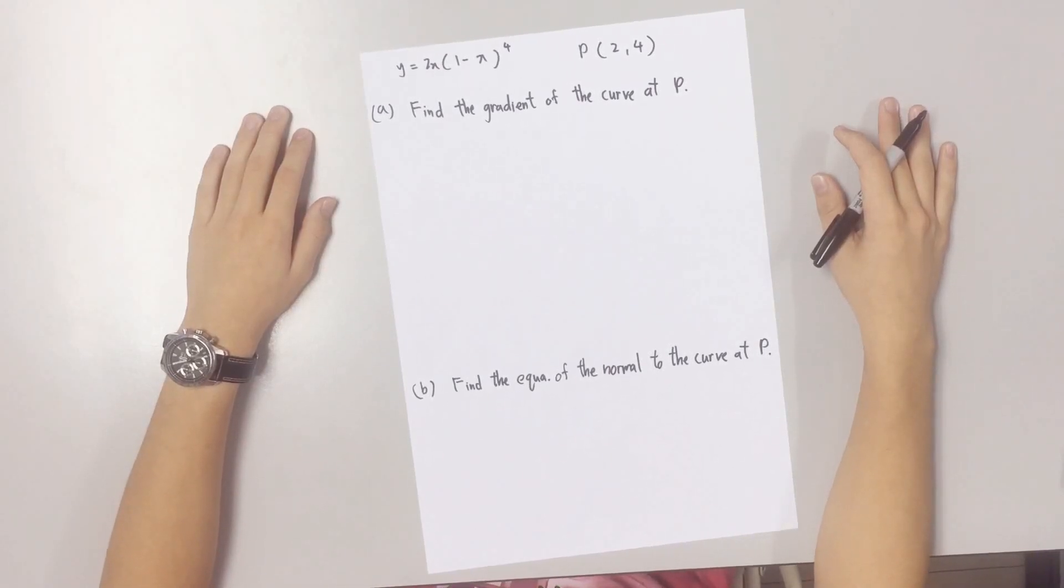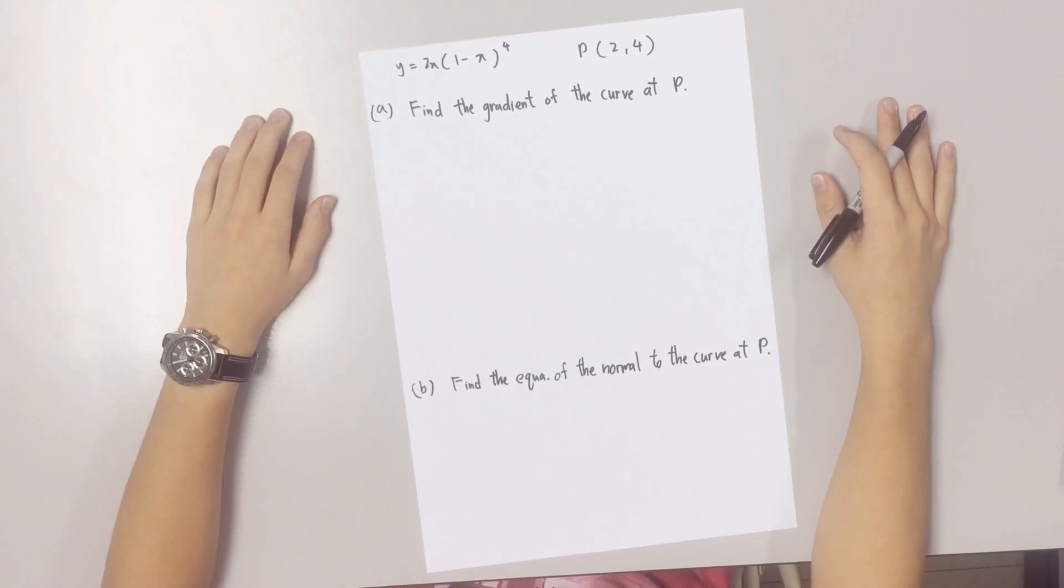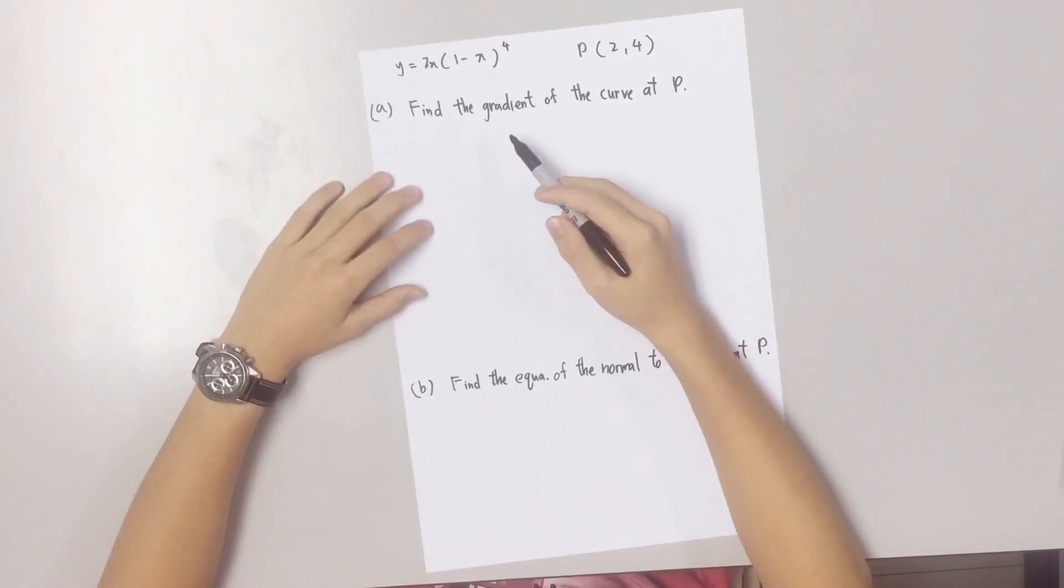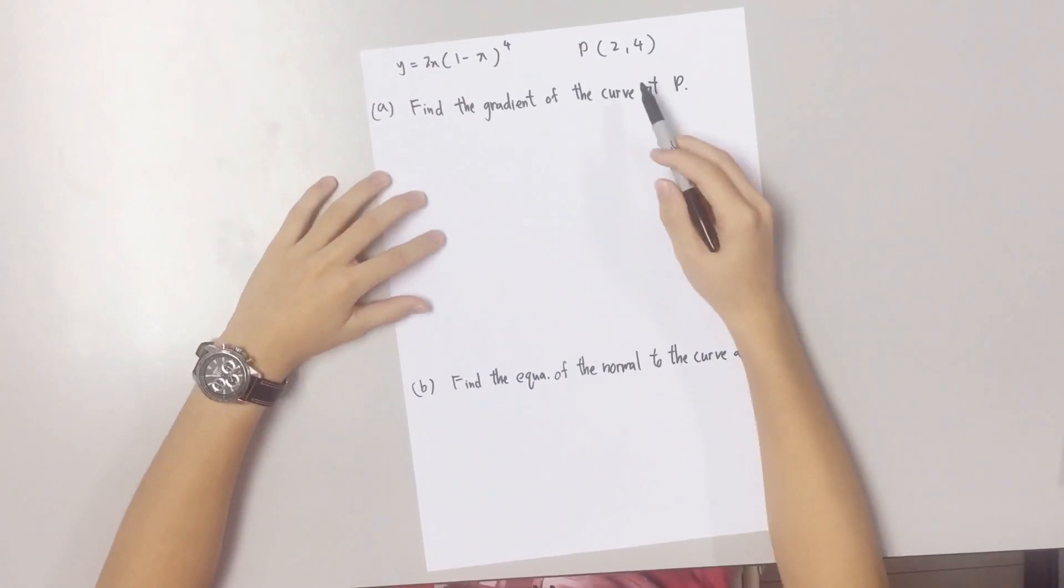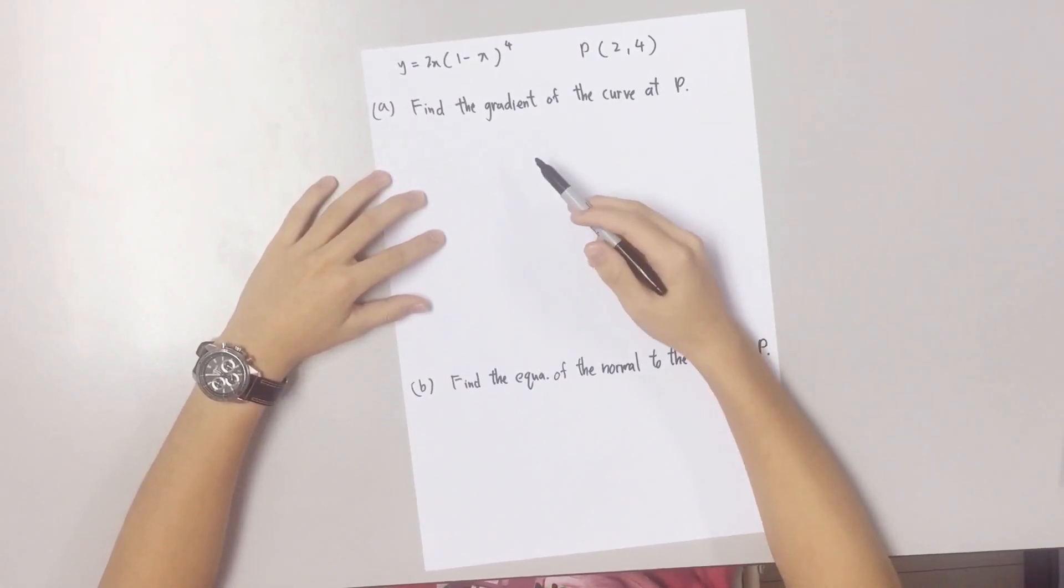For this video, let's look at the second question of SBM at Max paper tool 2015. This is the equation of the curve given on the question paper and this is a point where the curve passes through.